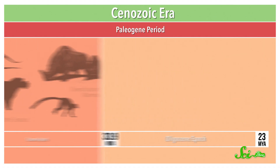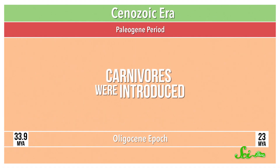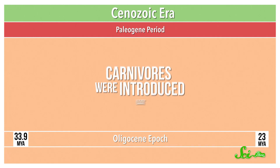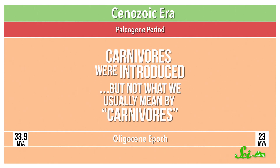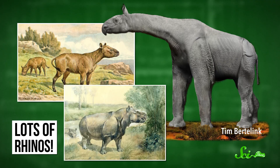The Oligocene, from 33.9 to 23 million years ago, saw the introduction of carnivores — but not what we usually mean by carnivores. There were already animals that ate meat. I'm talking Carnivora, the taxonomic order of mammals that includes cats and dogs. There were also lots of different kinds of rhinos all over the place.